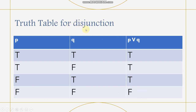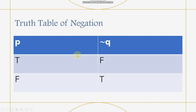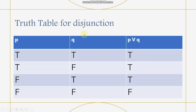And for the truth table of disjunction, we have P or Q. When P is true and Q is true, the result is true. When true and false, it is true. When false and true, it is true. When false and false, it is false. These tables — for negation, conjunction, and disjunction — will be our reference base for the number of given propositions in our examples.